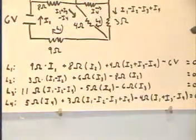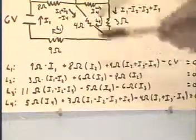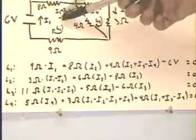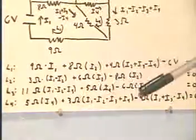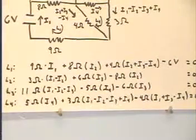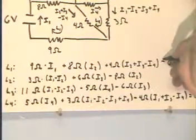Now if we look at L1, loop 1 here, as we move around the loop in the indicated direction, we see we first have a 6-volt drop, and it's a drop, so it's positive.